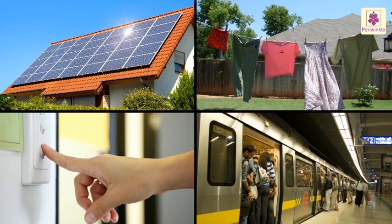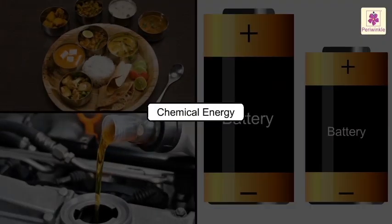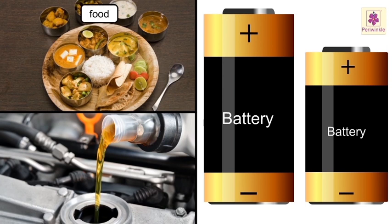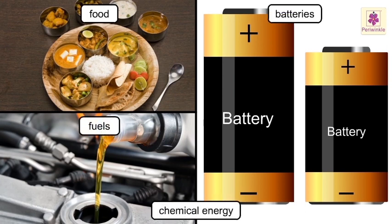If each one of us is careful in preserving energy in whatever little way we can, it will be for our own good. Food, fuels and batteries contain chemical energy. This form of energy is released when chemical reactions take place. Some foods have lots of concentrated energy, and most packaged foods have the energy values printed on the packet.